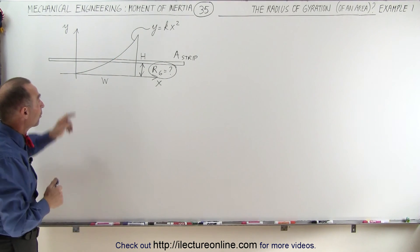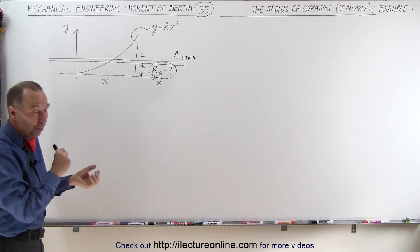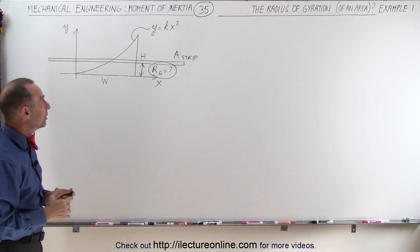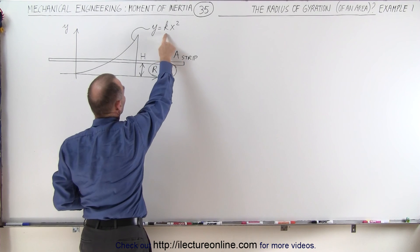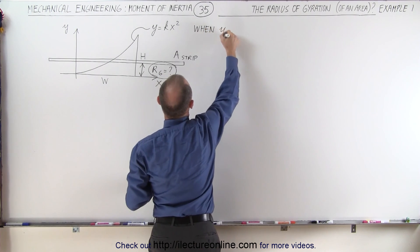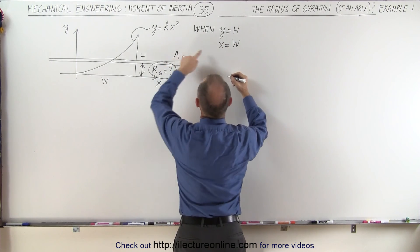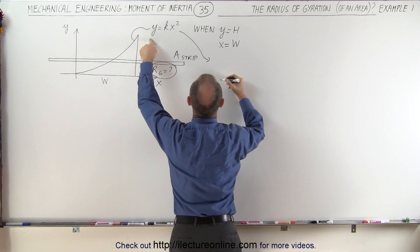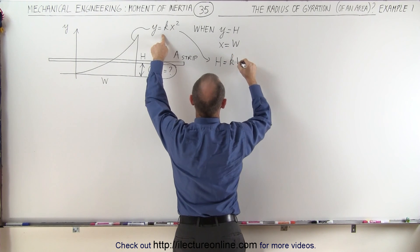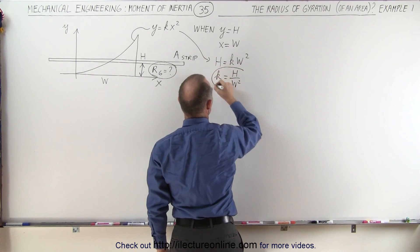First we find the moment of inertia of the figure, then we find the radius of gyration by setting the moment of inertia of the strip equal to the moment of inertia of the figure. Before we can start, we need to find the value for k. We have y equals kx squared, and when y equals h, x must equal w. Plugging those in: h equals k times w squared, so k equals h divided by w squared.